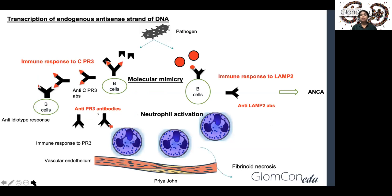The two theories which summarize the pathogenesis of ANCA-associated vasculitis are the autoantigen complementary peptide theory and the molecular mimicry theory. According to the autoantigen complementary peptide theory, whenever there is a pathogen in the body, there is an anti-idiotype response by which anti-PR3 antibodies are produced by B cells secondary to the immune response to the original complementary-PR3, produced by transcription of the endogenous antisense strand of DNA. These anti-PR3 antibodies bind to the neutrophils, causing neutrophil activation.